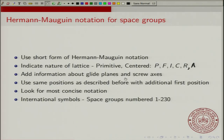Then you add the information about glide planes and screw axes. We will look at each position — the first, second, and third positions of the Hermann-Mauguin symbol — and we will see whether there are glide planes or screw axes at these positions. We will use the same positions with an additional extra position that indicates this symmetry.